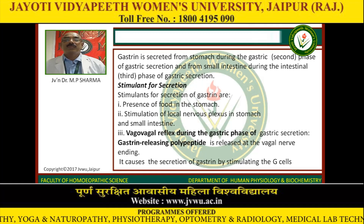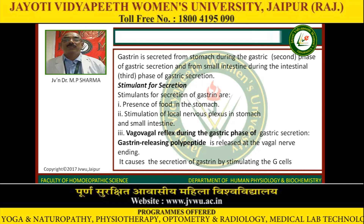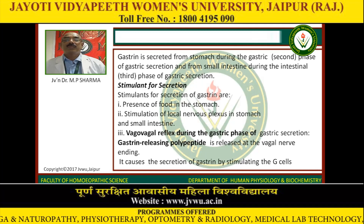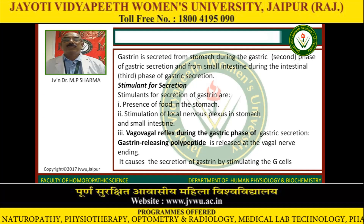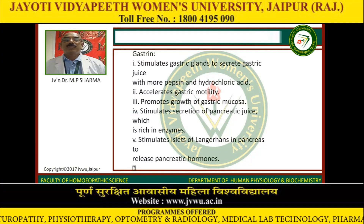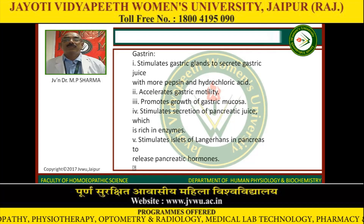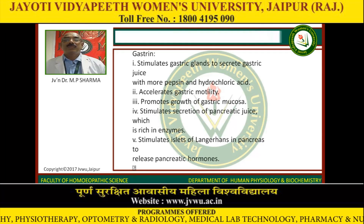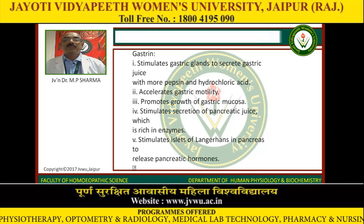Stimulants for the secretion of gastrin are: presence of food in the stomach; stimulation of local nervous plexus in stomach and small intestine; and vagal reflexes during the gastric phase of gastric secretion. Gastrin-releasing polypeptide is released at the vagal nerve ending and causes secretion of gastrin by stimulating the G cells. Gastrin stimulates the gastric glands to secrete gastric juice with more pepsin and hydrochloric acid, accelerates gastric motility, promotes growth of gastric mucosa, stimulates secretion of pancreatic juice rich in enzymes, and stimulates the islets of Langerhans in the pancreas to release pancreatic hormones.